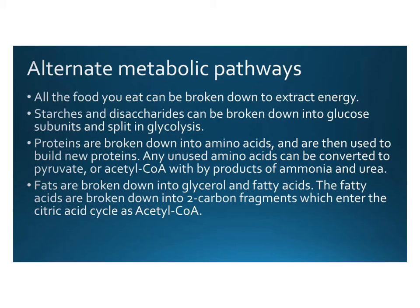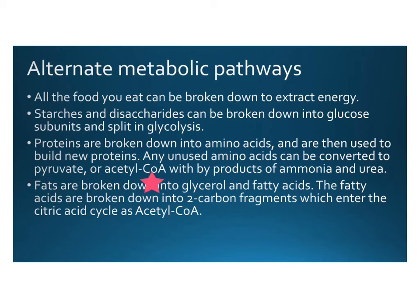There are some alternate metabolic pathways. The food you eat is broken down to extract energy. Starch and disaccharides like sucrose and maltose are broken down into glucose by your digestive system and enter glycolysis. We also ingest proteins, which are broken down into amino acids — most are used to build new proteins, but unused amino acids can be converted to pyruvate or acetyl-Coenzyme A, with byproducts of ammonia and urea. You can break down protein for energy, though it's not the best way, and the toxic byproducts of ammonia and urea need to be removed from the body.